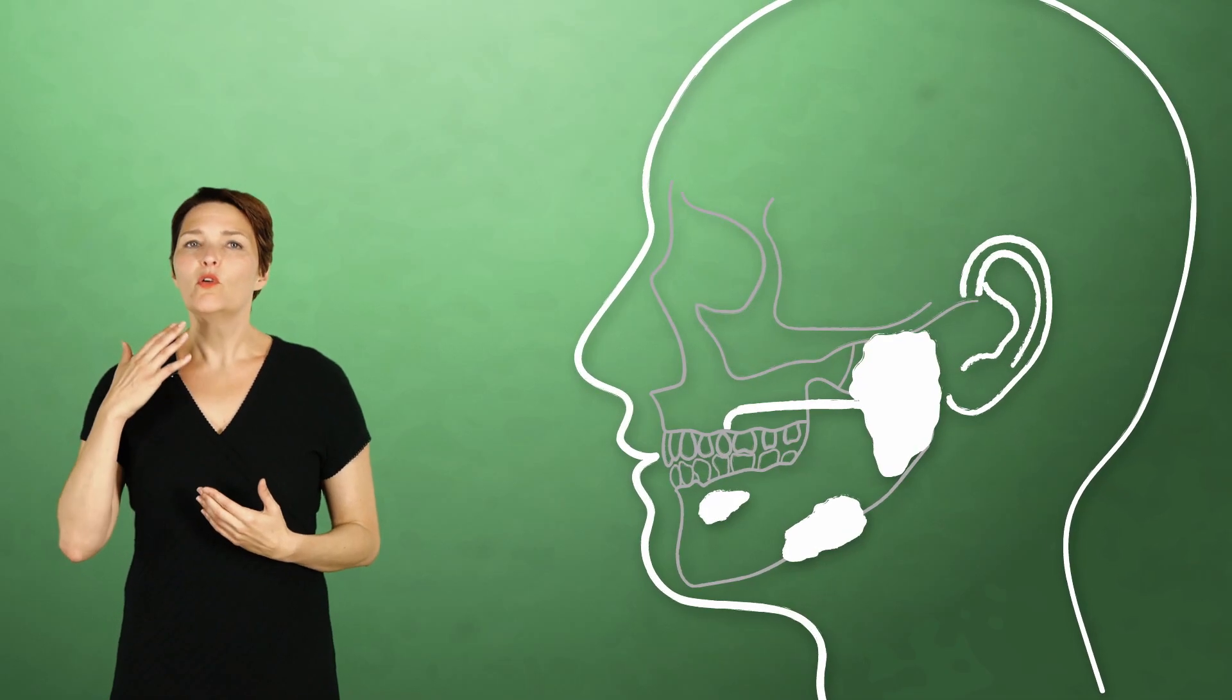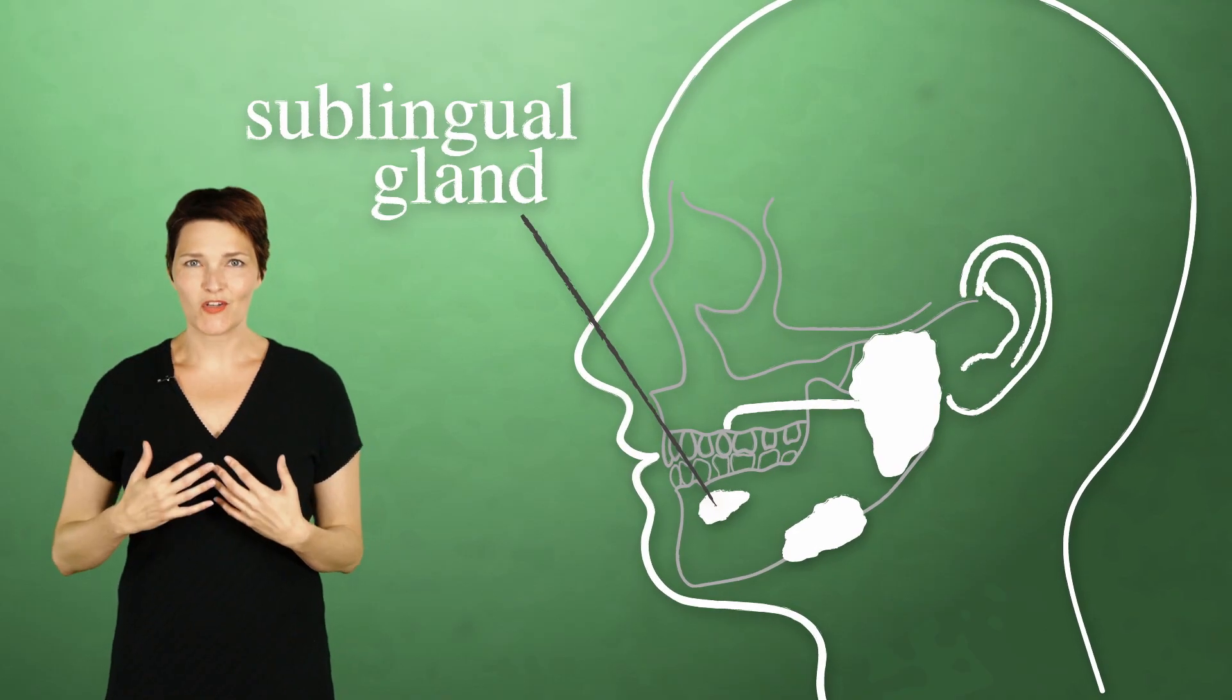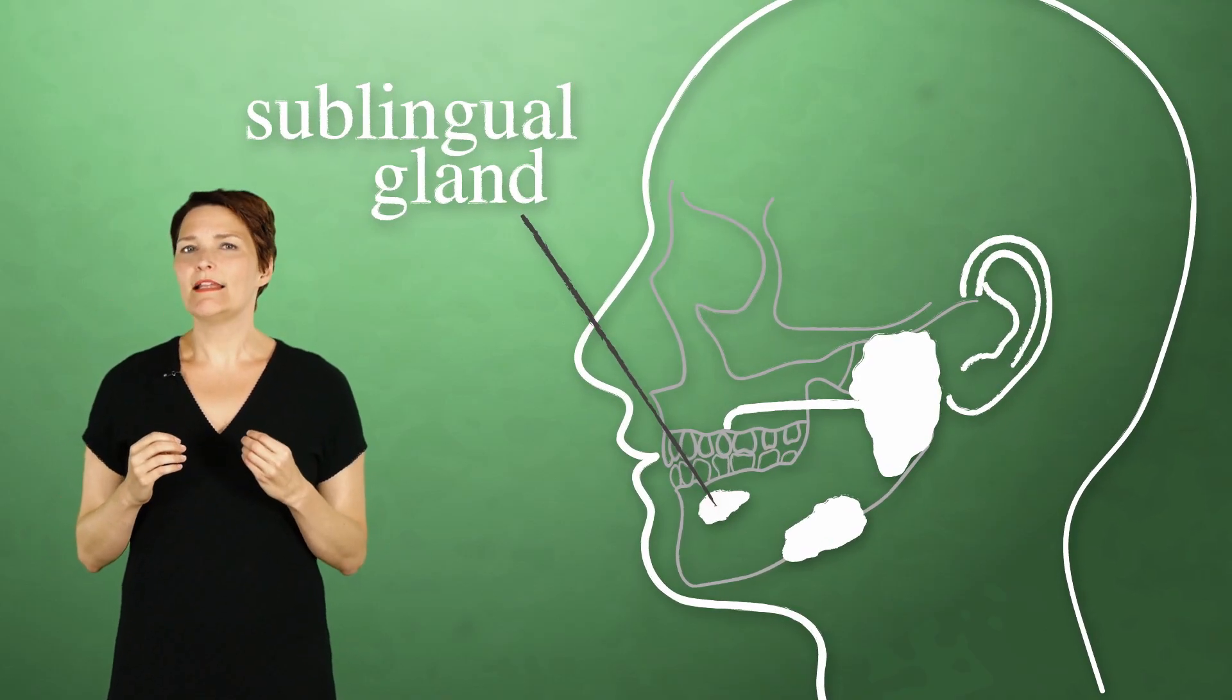Also below the floor of the mouth, there's the sublingual glands, which are shaped like almonds. They produce similar lubricating secretions.